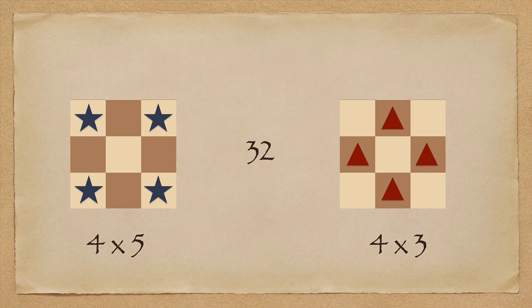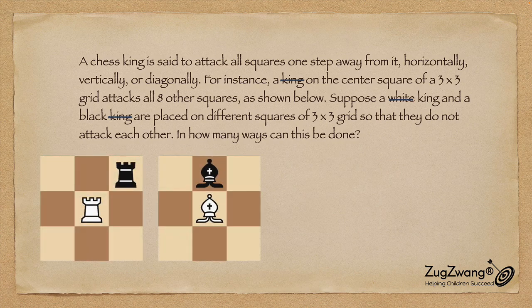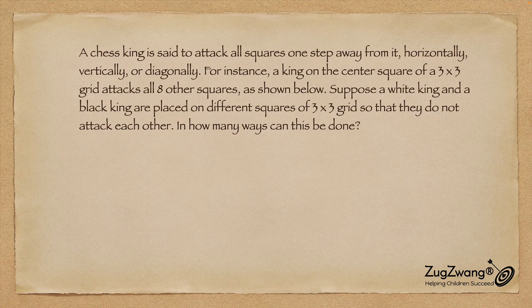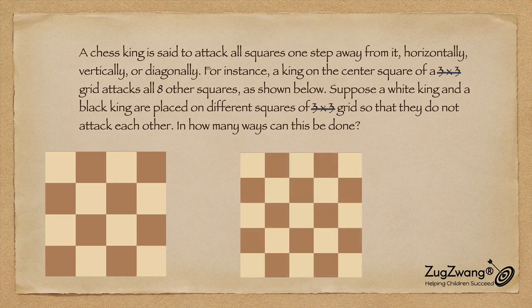If you got 32, fantastic! Please leave a comment about how you solved it. Now we're going to go a step further. There's nothing that says it has to be only a king — what if instead of a king you had a rook, a bishop, a knight, or a queen? How would your answer change? And similarly, what if instead of a three by three grid you had a four by four grid or a five by five grid with two kings placed on it? This is the kind of non-routine, exploratory math that we love to do.